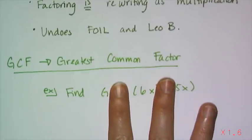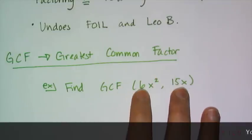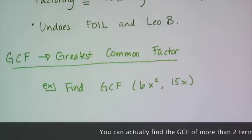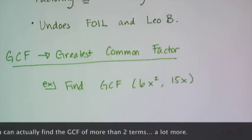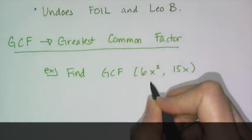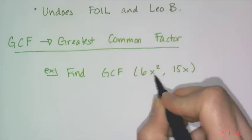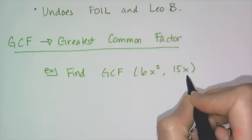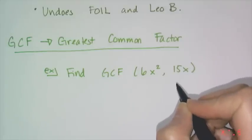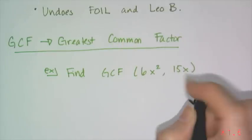GCF stands for the greatest common factor. And so if I give you two terms or two monomials, and I ask you to find the GCF of those two terms or those two monomials, I want you to think about what each of these things has in common. You can kind of do this logically, or you can do this very systematically, which I suggest you do because it's really easy to leave a factor in there.